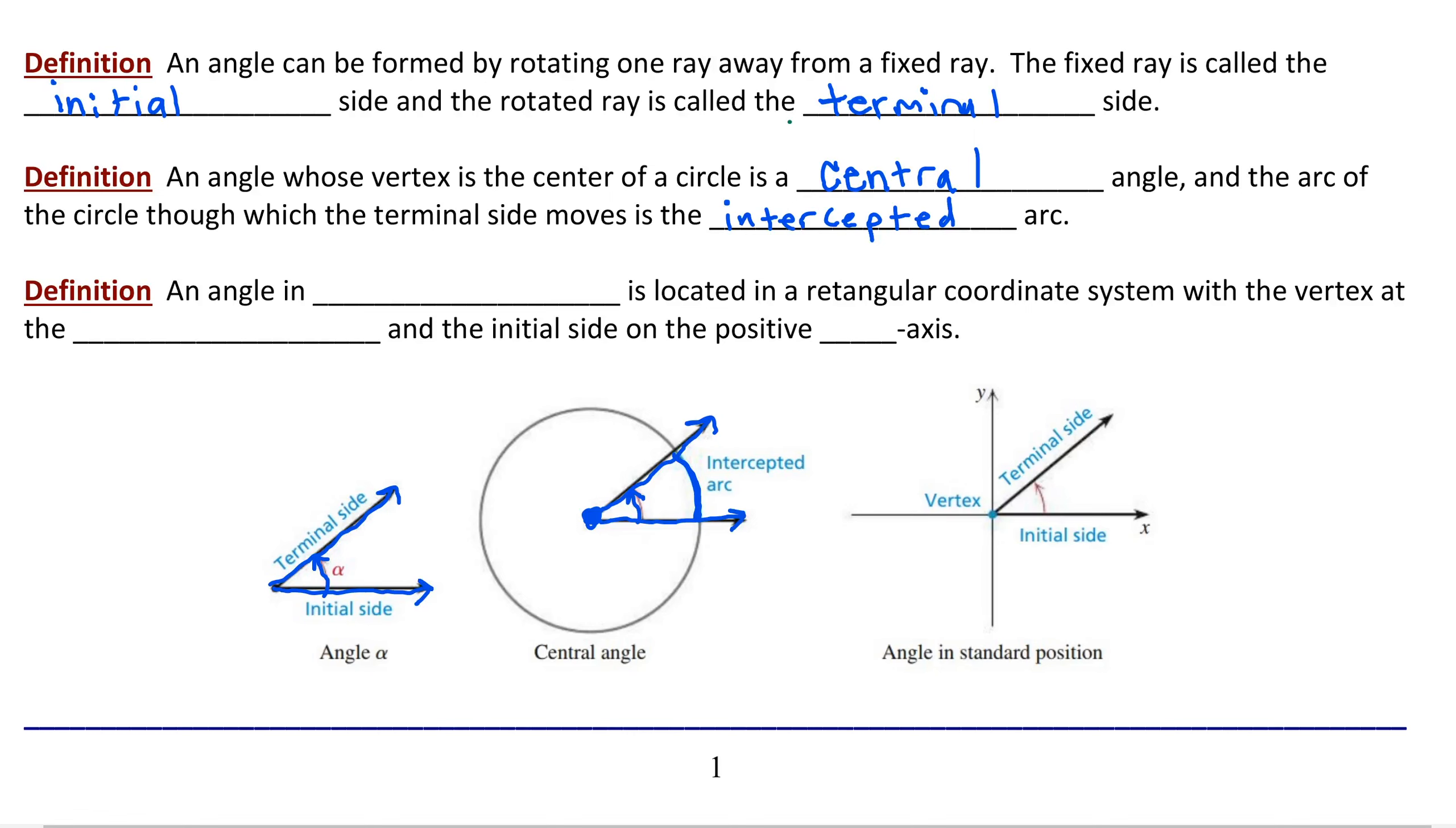And the third definition that we're going to cover is a very important one. Simple but fundamental. An angle in standard position. An angle in standard position is located in a rectangular coordinate system with the vertex at the origin and the